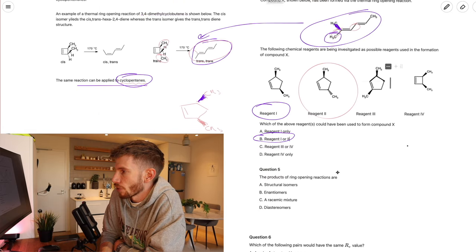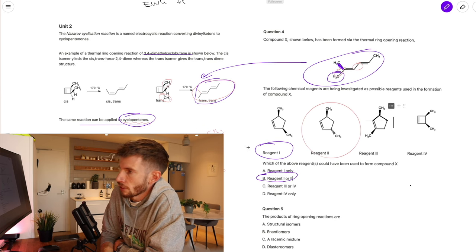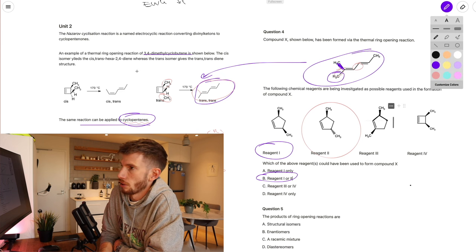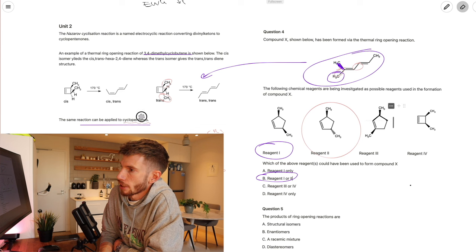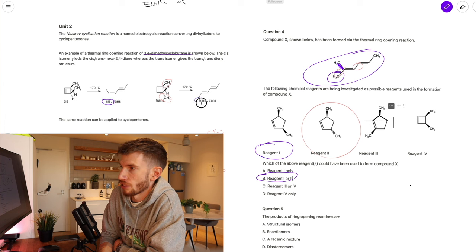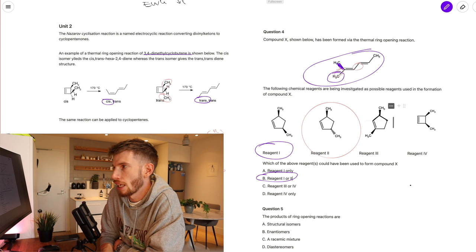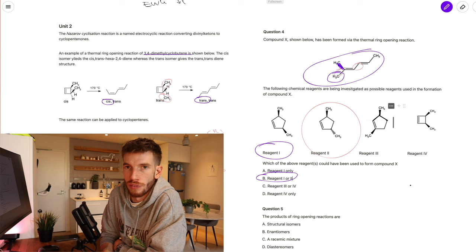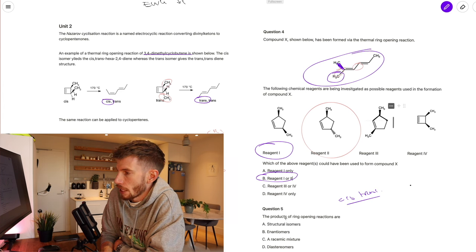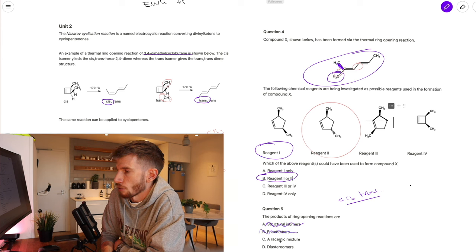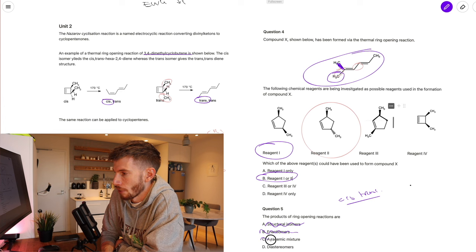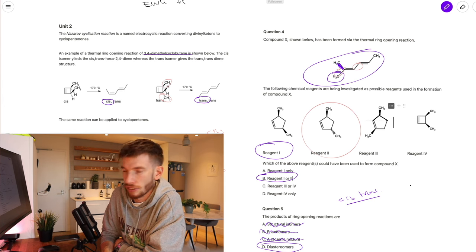Question 5: the products of ring opening reactions are what type of isomers? Going back to the structures shown earlier, the only difference between the two products is one has a cis bond and the other has a trans bond. That is a type of stereoisomerism. They're definitely not structural isomers, and they're not enantiomers — those are optical isomers. A racemic mixture is a mix of two enantiomers, so that's also out. By definition, cis-trans isomerism is a form of diastereomerism.